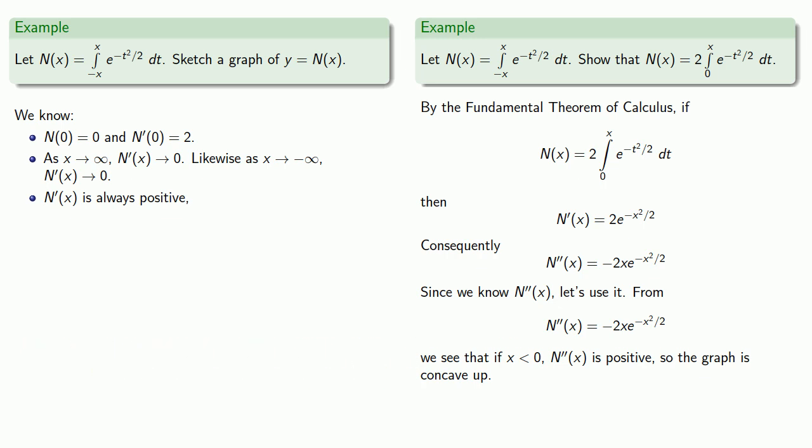On the other hand, if x is greater than 0, our second derivative is negative, so the graph is concave down. So that means at x equal to 0, the graph changes from concave up to concave down.